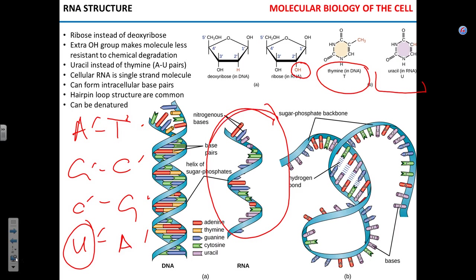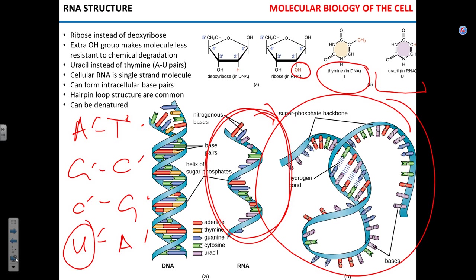Now, the single-strand molecule of RNA forms what is called secondary structure. The primary structure of RNA is its sequence — the sequence of nucleotides. The secondary structure is when that single strand of mRNA is folding. It folds to form mostly so-called hairpin structures, where you have paired regions and a loop at the end. This hairpin loop structure is pretty common, and it bears a lot of functional meaning for the RNA.